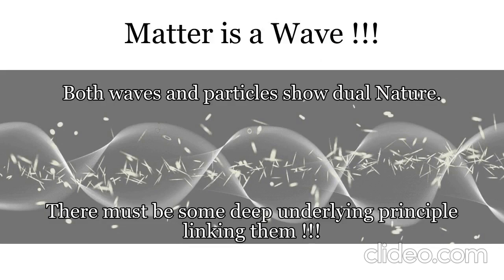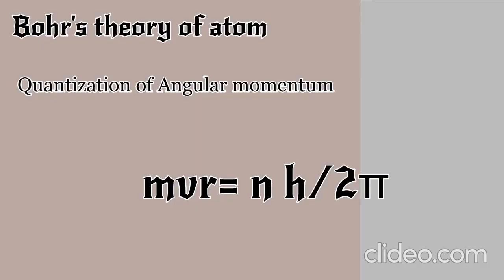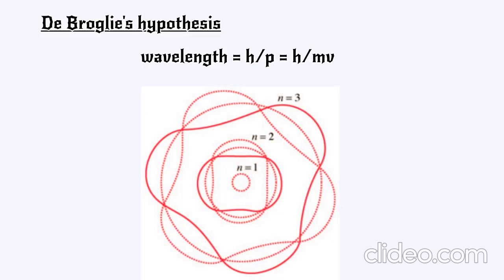Bohr proposed another quantization theory to deal with the predictions of atoms. He proposed that angular momentum is quantized and an integral multiple of h by 2π. It turns out that this comes as a consequence of de Broglie hypothesis.